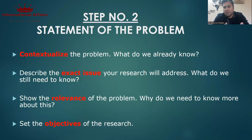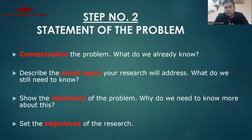For example, if you're working on the post-2021 situation in Afghanistan, what do we still need to know? We need to know how transnational terrorist groups from Afghanistan — Al-Qaeda, TTP, and others — may create problems for Pakistan, other regional states, or global powers. This is the second important thing to address when formulating your Statement of the Problem.